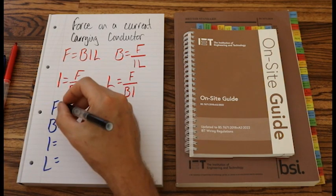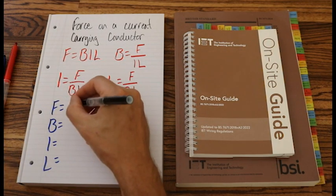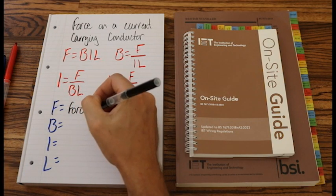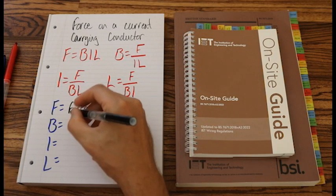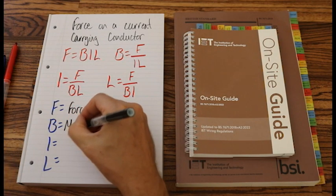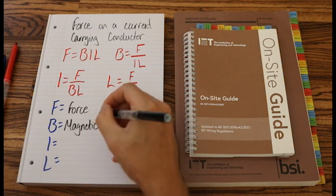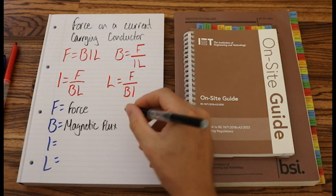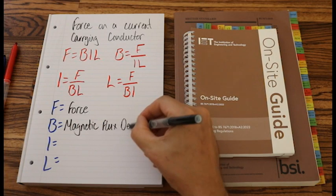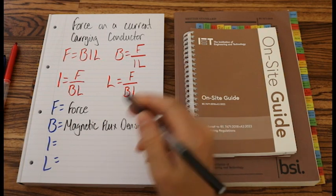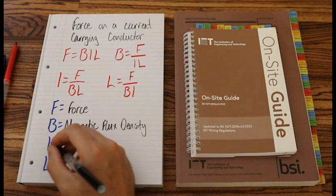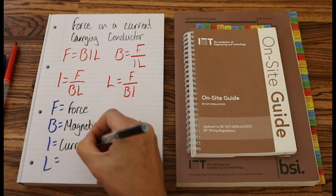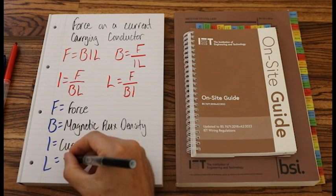Alright, so F, capital F, that is force. And B is magnetic flux density. And I, as always, is current. And L is length.